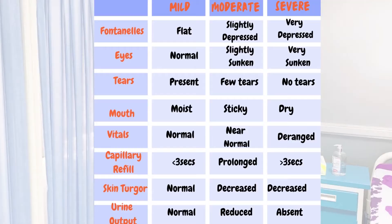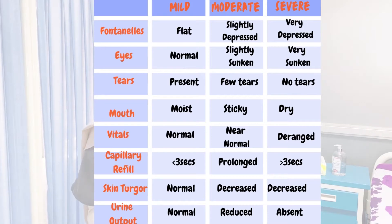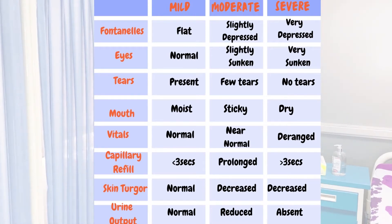In terms of symptoms, for mild dehydration, patients are usually hemodynamically stable with moist mucous membranes. They might be thirsty a bit, but for the most part they're okay. For moderate dehydration, patients might be irritable, might be eager to drink, might have dry mucous membranes, and might have slight sunken eyeballs.